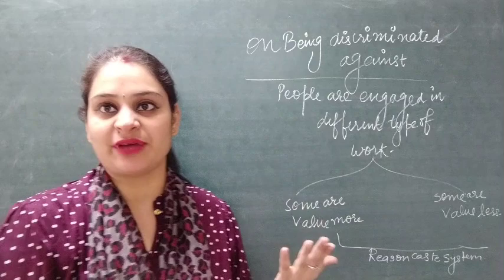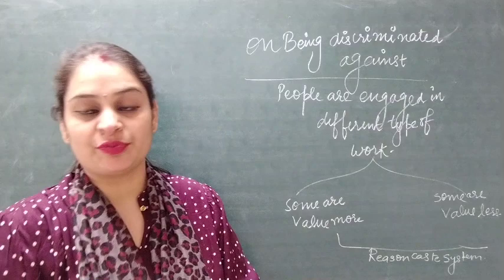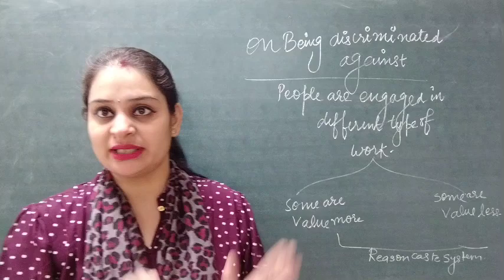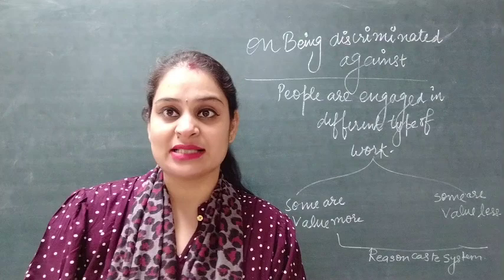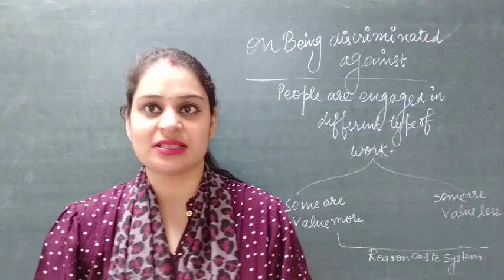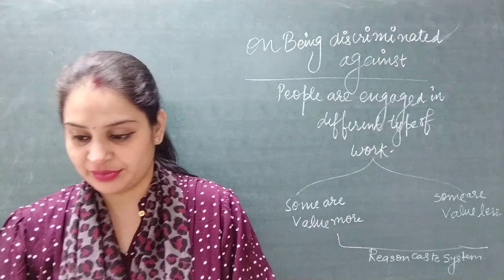Now we discuss what it means to be discriminated against. We want to identify the different things that create discrimination in society. One main reason is that people are engaged in different types of work. According to their work, some are valued more and some are valued less. For example, a laborer doing work on the road is valued less compared to someone doing management work in an office.